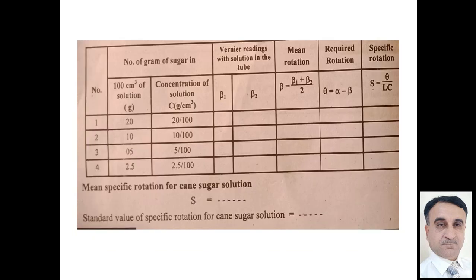In this table we will find concentration of solution. Mass of the sugar in 100 centimeter cube of distilled water - first time we take 20 grams, then take 10 grams, then take 5 grams, then take 2.5 grams of sugar. After mixing we can find concentration of the solution, that is 20 by 100, 10 by 100, 5 by 100, and 2.5 by 100. We will find the vernier reading with this solution one by one, first we will find 20 percent solution.